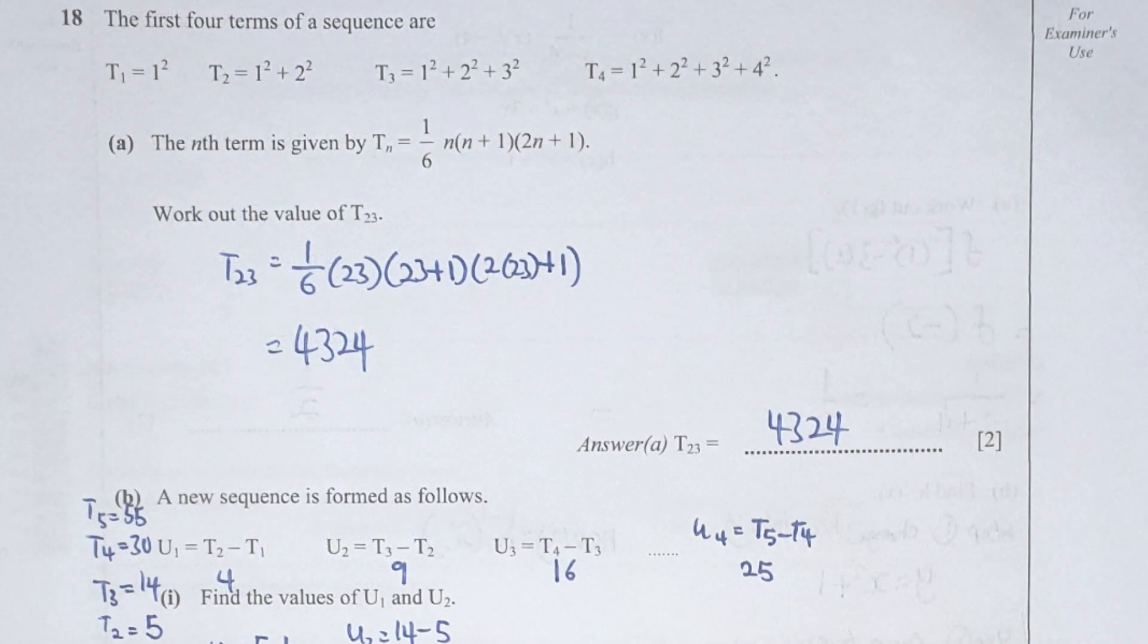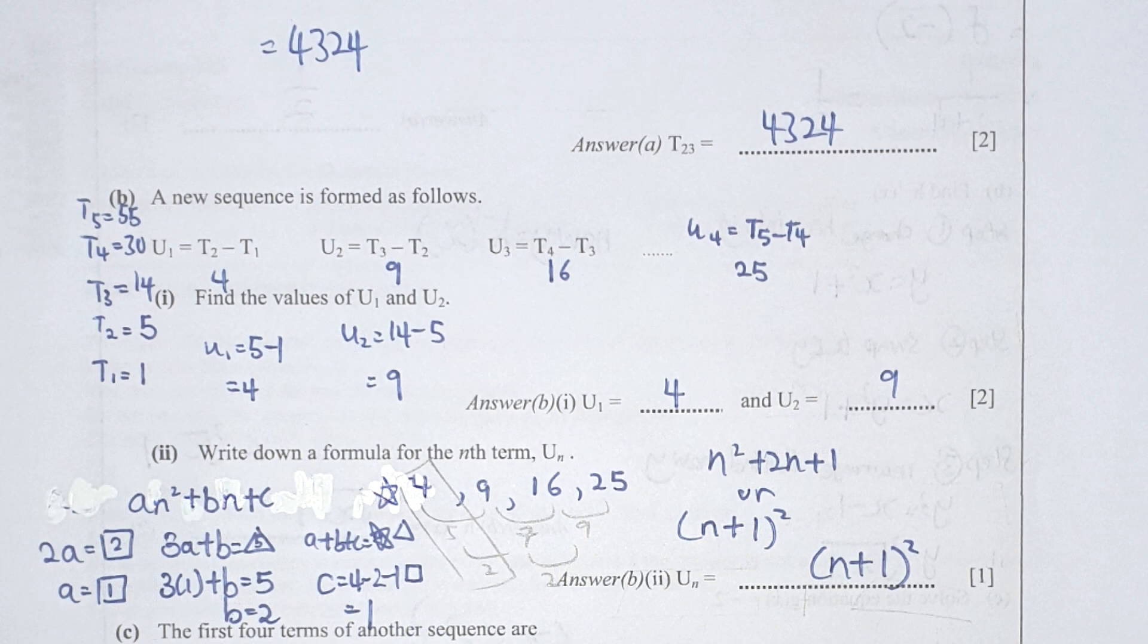Question 18, your part a here: find the value of t when it's 23. So what you need to do is just substitute 23 into n's position. You should get your t's results as 4,324. For your b here, u1 is actually t2 minus t1, which is 4. And when your u2 is actually 9, your u3 is 16, and your u4 is 25.